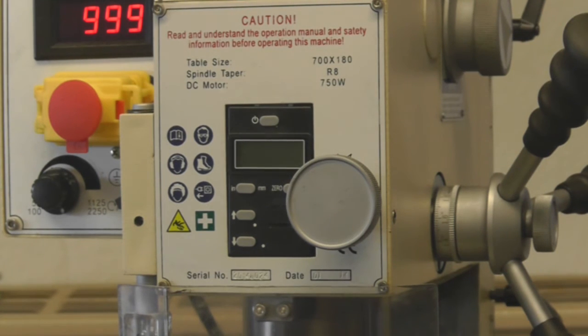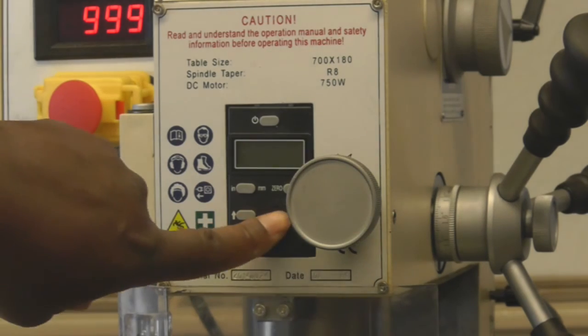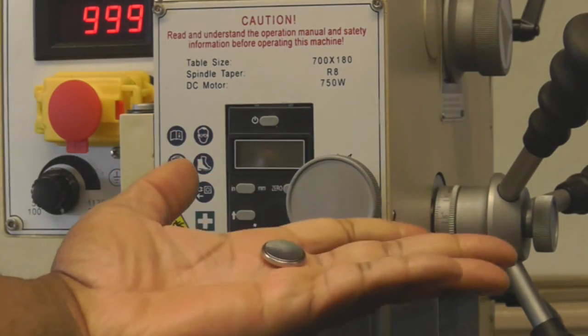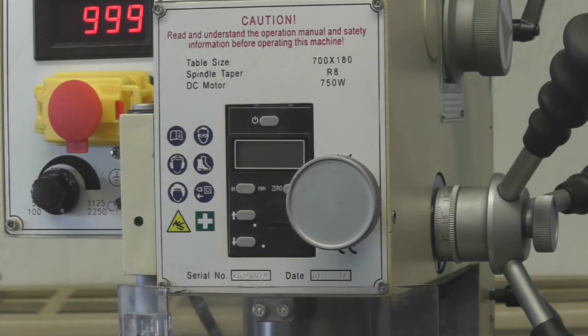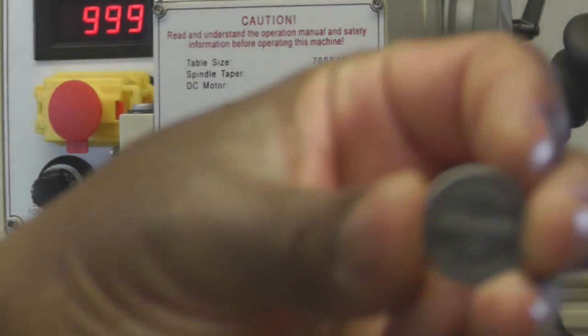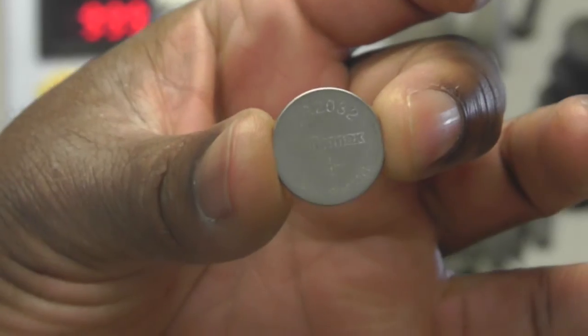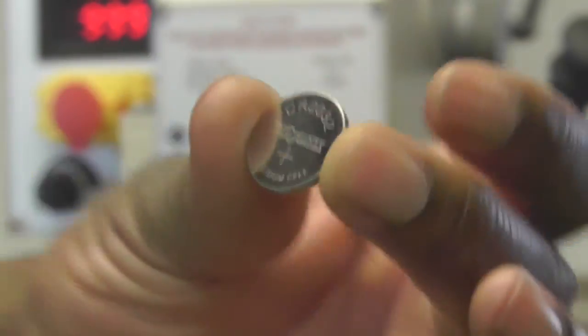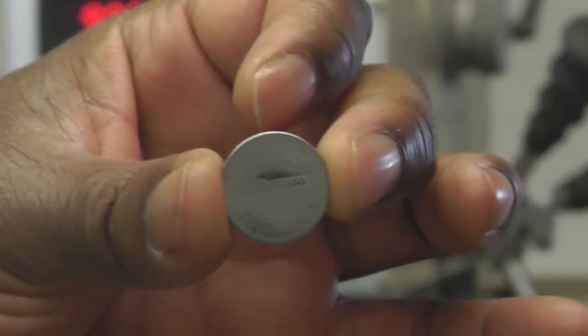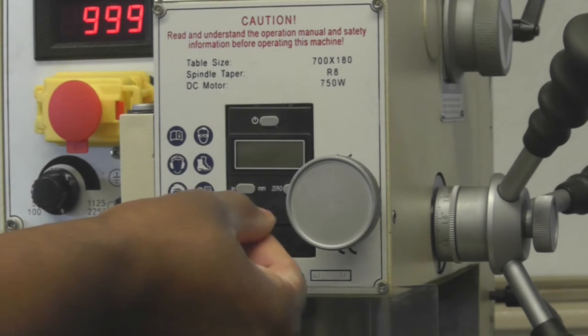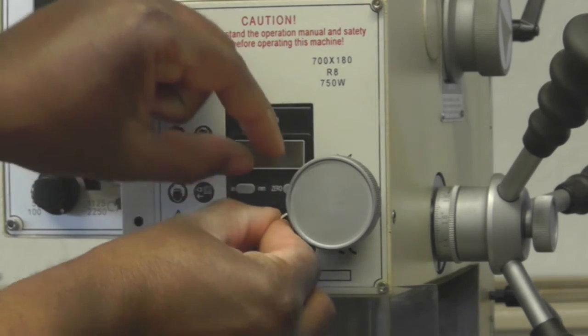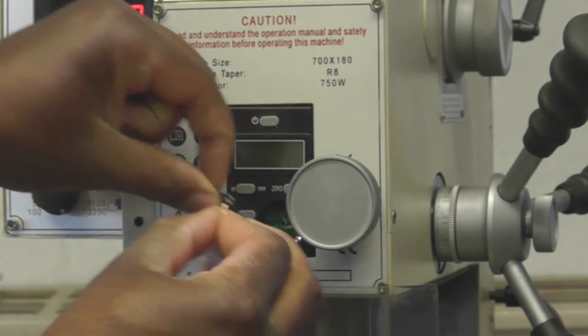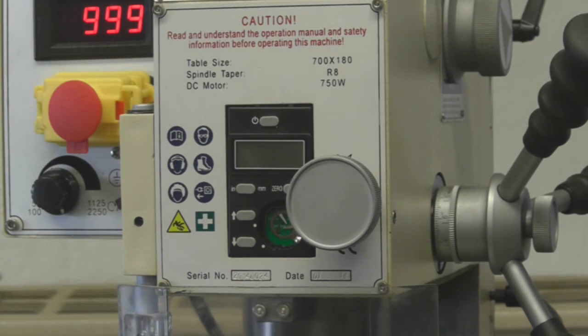One thing I can do while I'm waiting for this to finish the last part of the break-in is to install the battery into the Quill DRO. The battery that comes with these is a CR2032. We'll take a dime or something similar and you twist off this cap. That lets you into the battery compartment.